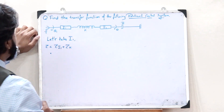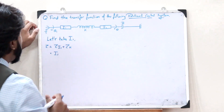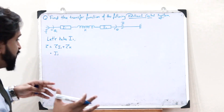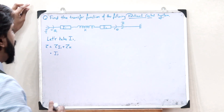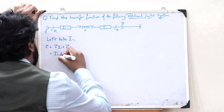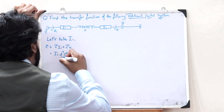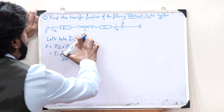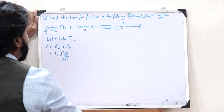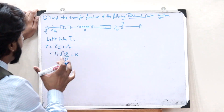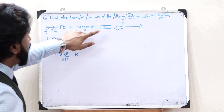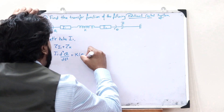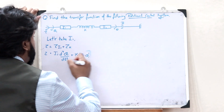Tau because of I1 is given as I1 into alpha, which is the angular acceleration. Angular acceleration is simply the second order derivative of this particular angular displacement, so this becomes I1 into d squared theta1 by dt squared. The restoring torque developed in this particular spring is given as K into the difference between the angular displacements, which is K into theta1 minus theta. Let us take this as equation number 1.